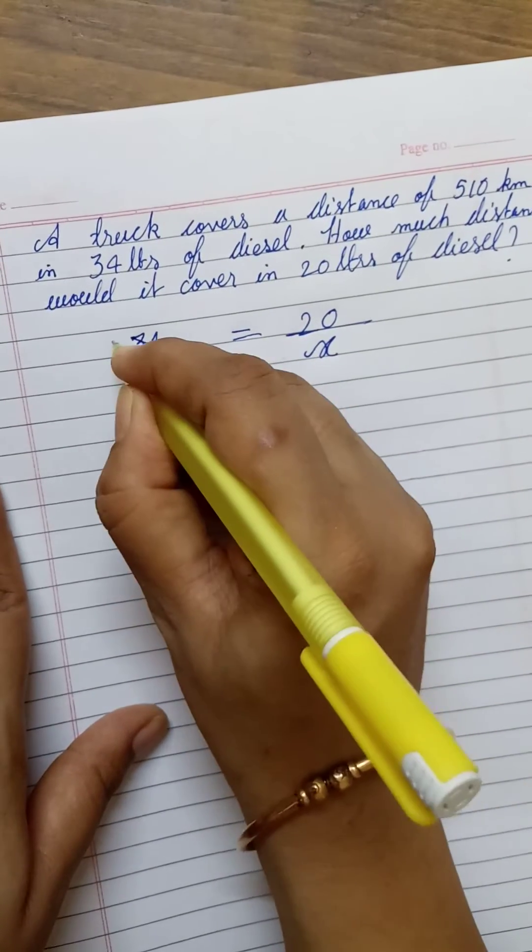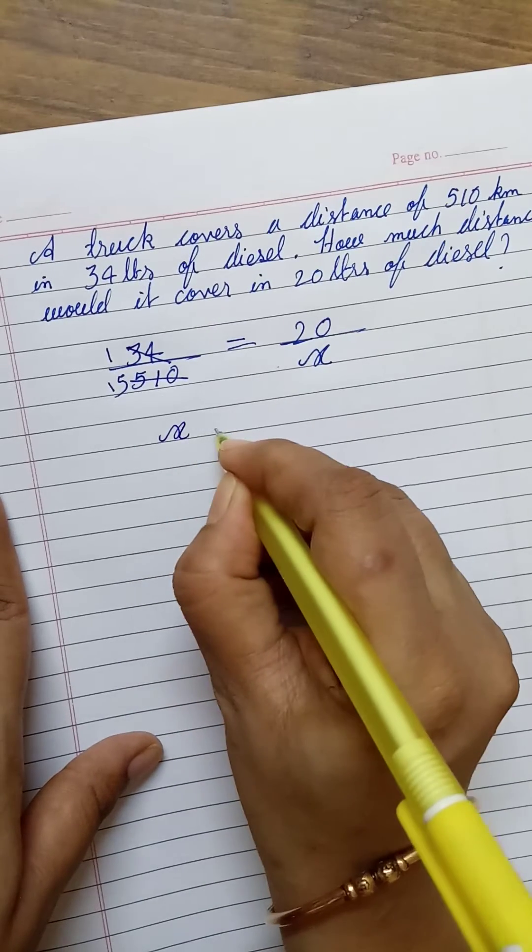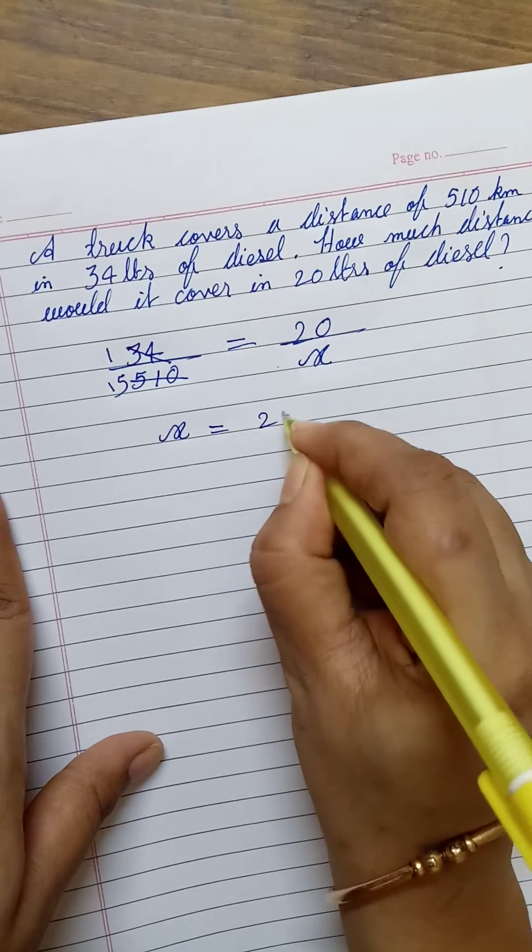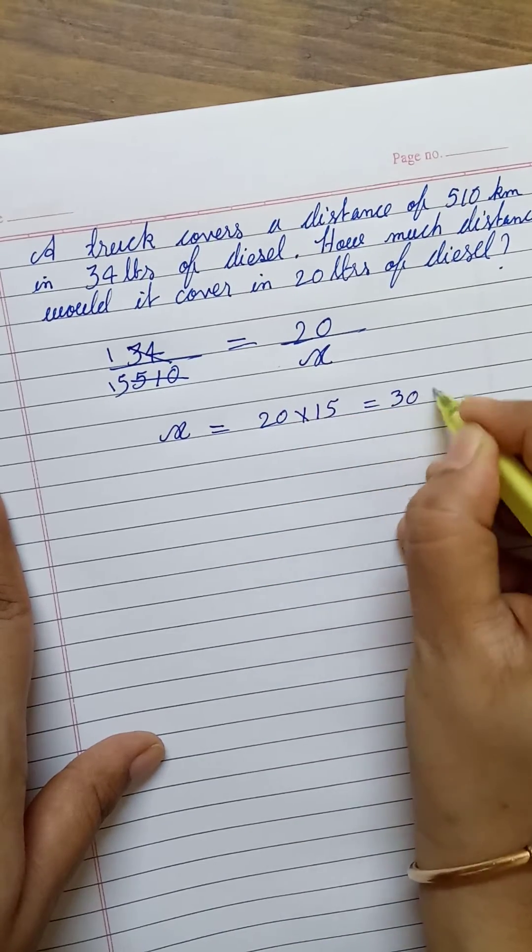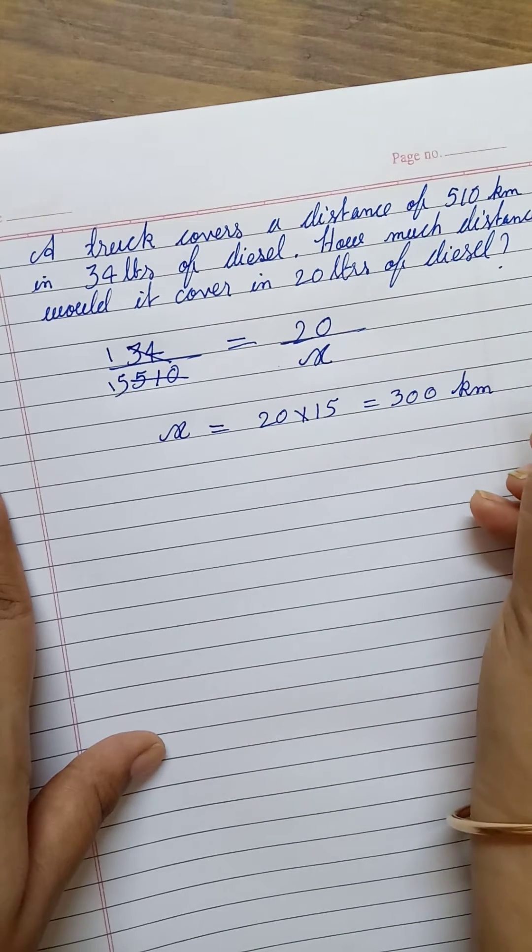We have x is equal to 20 into 15, which is 300 kilometers.